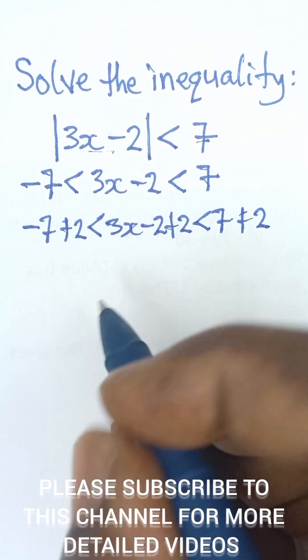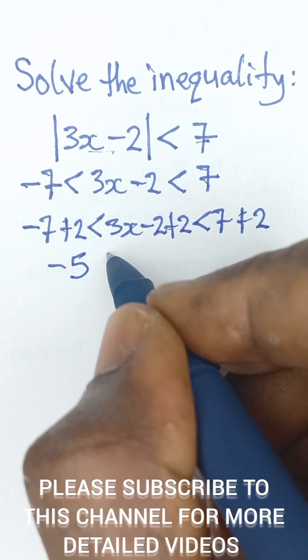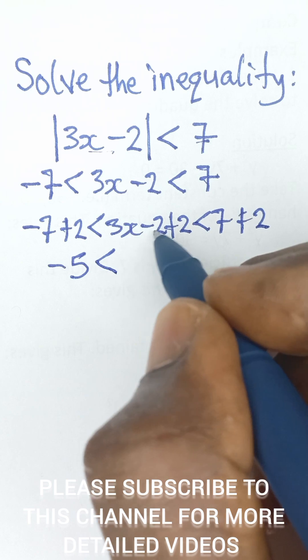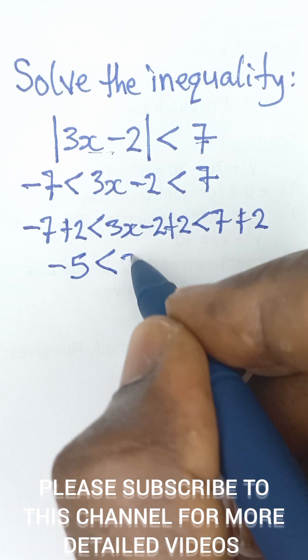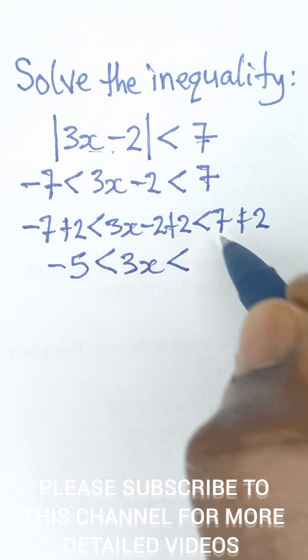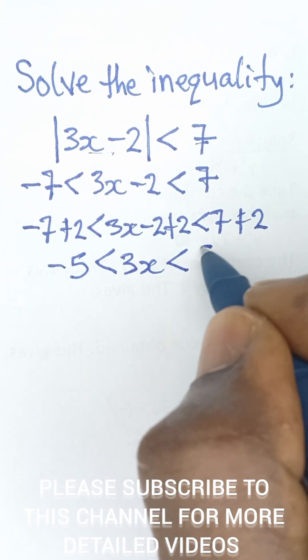So negative 7 plus 2 will give us negative 5, and it's less than negative 2 plus 2 is 0. So you are left with 3x on this side, and that will be less than 7 plus 2 is 9.